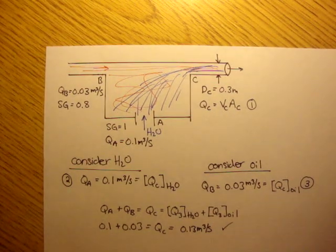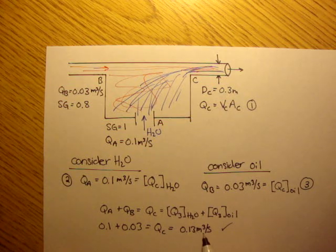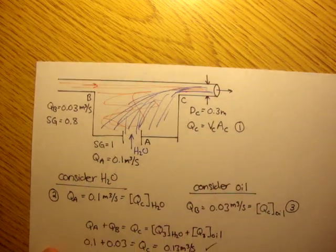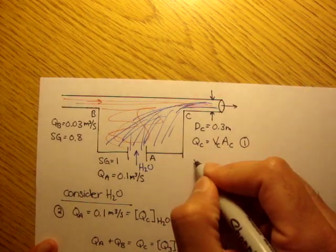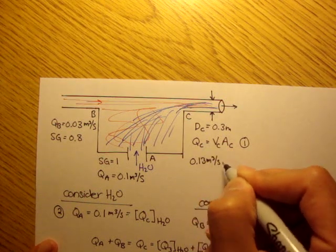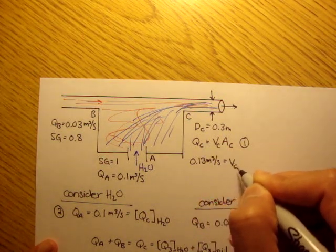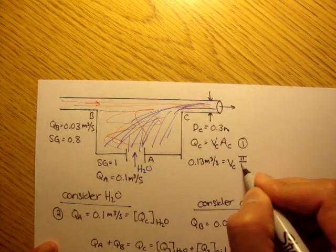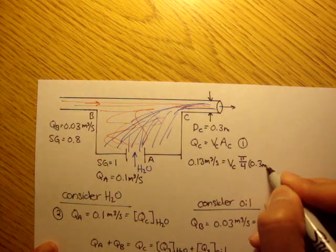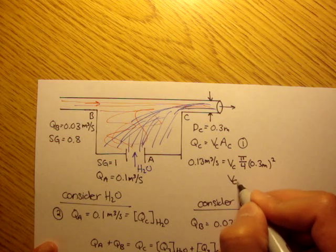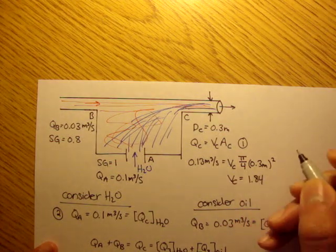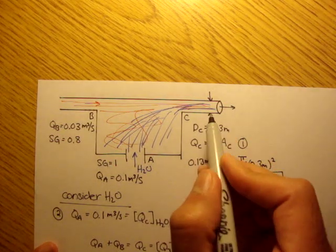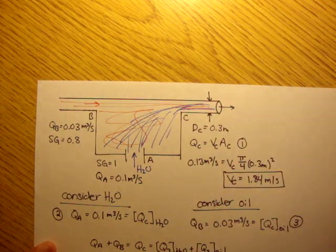We can plug QC into equation 1 to get velocity. QC is 0.13 meters cubed per second, which equals velocity times area. The area is pi over 4 times the diameter squared, since it's a tube. We find that the velocity equals 1.84 meters per second — that's the velocity of the mixture of oil and water coming out of the system.